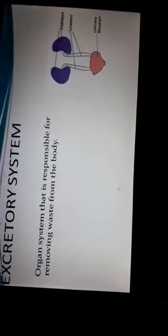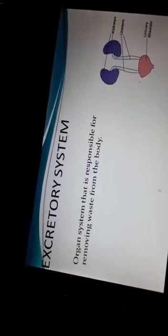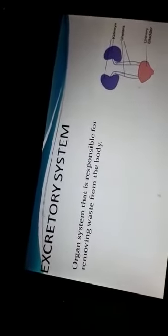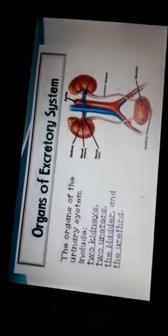First we are going to deal with the excretory system. Basically, what is the excretory system? The organ system that is responsible for removing waste from the body is known as the excretory system. This system helps us to get rid of waste products. The waste can be in the form of liquid, solid, or gases.